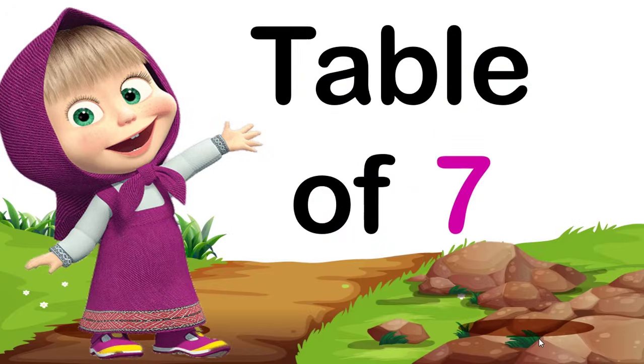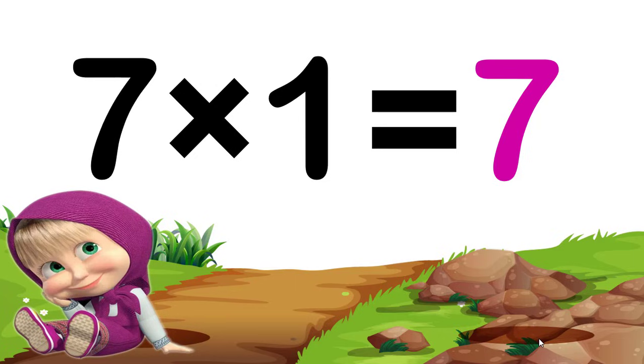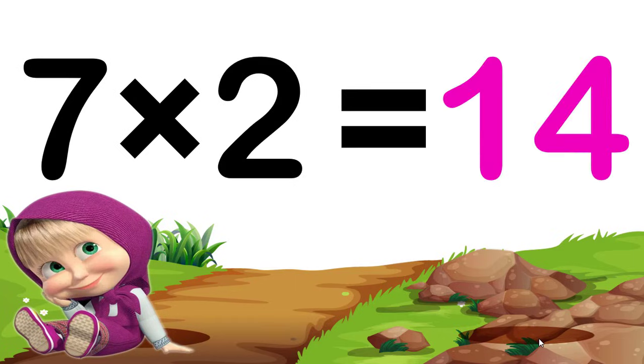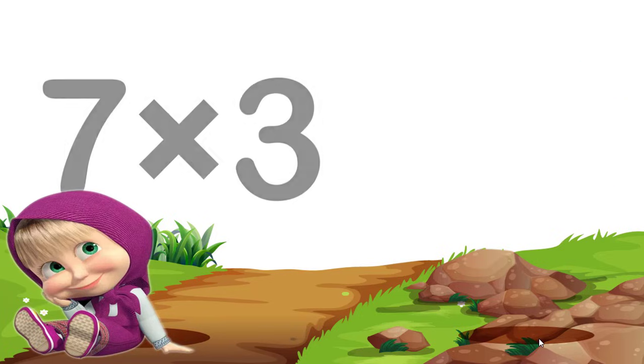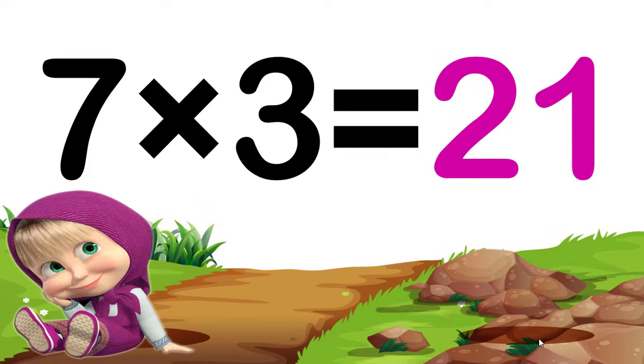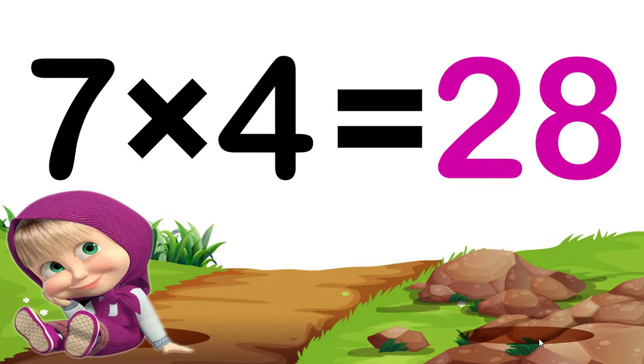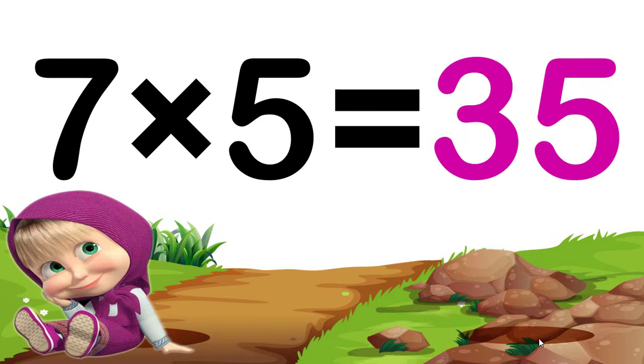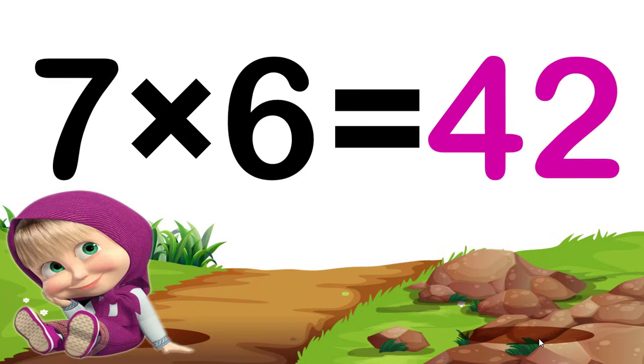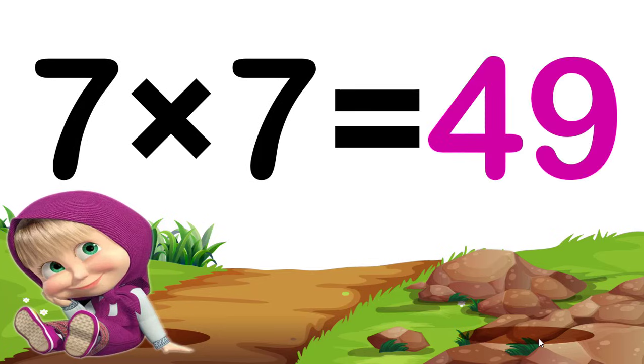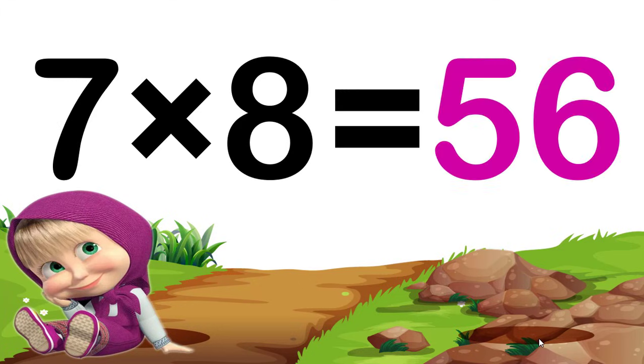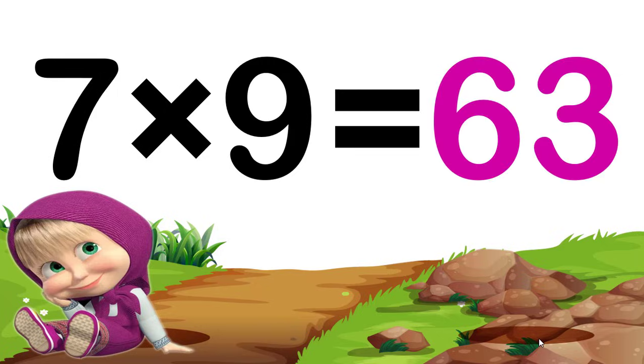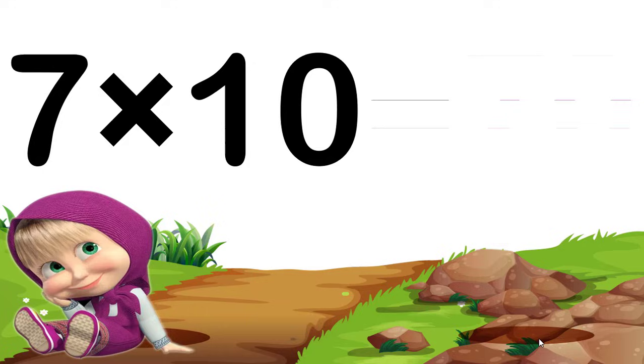Table of 7: 7 ones are 7, 7 twos are 14, 7 threes are 21, 7 fours are 28, 7 fives are 35, 7 sixes are 42, 7 sevens are 49, 7 eights are 56, 7 nines are 63, 7 tens are 70.